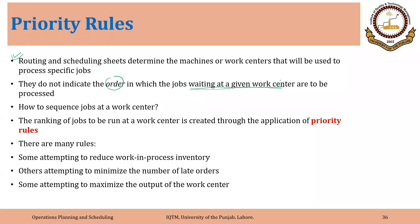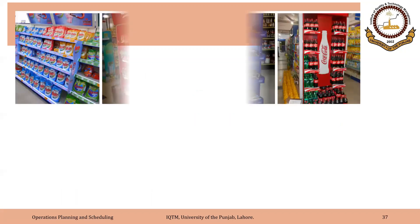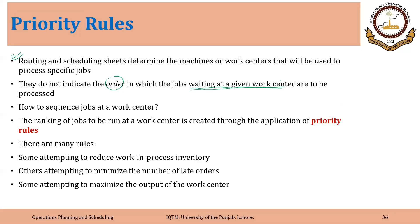That is something we assume in the case of infinite loading. How to sequence jobs at a work center — that is the basic question. If we have more than one order and one machine or work center available, how should we sequence them? The ranking of jobs to be done at a work center is created through the application of priority rules. We will discuss three rules, and the fourth one is just a derivative of the first three.